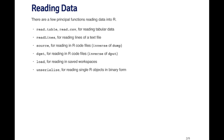The readLines function is for reading lines of a text file — it can read any type of file and gives you the text as a character vector in R. The source function is important for reading R code; if you have functions or anything written to a file, source will read all that code into R. The dget function is also for reading R code files, but for R objects that have been deparsed into text files. The load and unserialize functions are for reading binary objects into R.